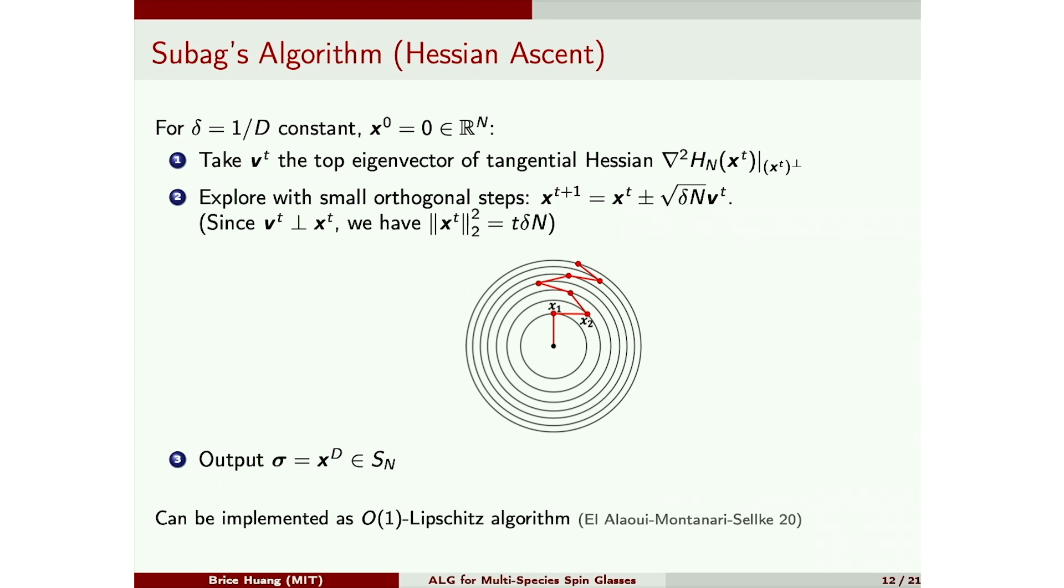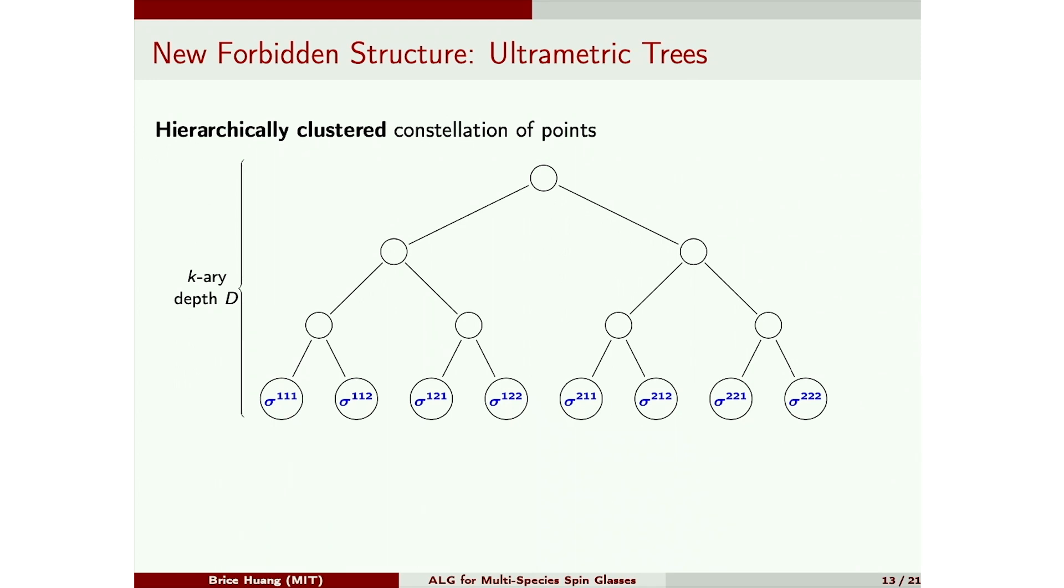So now let's turn to the proof of hardness. The protagonist of this proof is this new forbidden structure, which is called an ultrametric tree. So this represents a hierarchically clustered set of points. So on each leaf of this tree is a point in the constellation, and the tree kind of prescribes the hierarchical clustering. So every pair of siblings in this tree has the same overlap. Every pair of cousins has the same overlap, which is smaller than the sibling overlap, and so on. And you can kind of see how this gives you clustering in a hierarchical way. We think of the branching factor k and the depth d both as big constants. And these overlaps as the multiples of 1 over d. So this is kind of a densely branching tree.